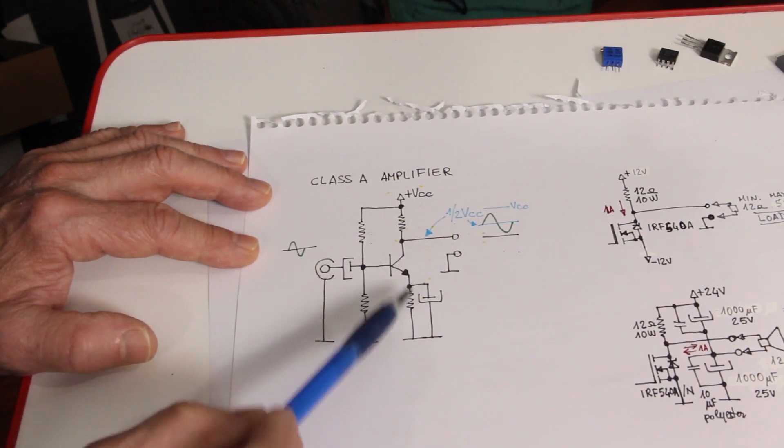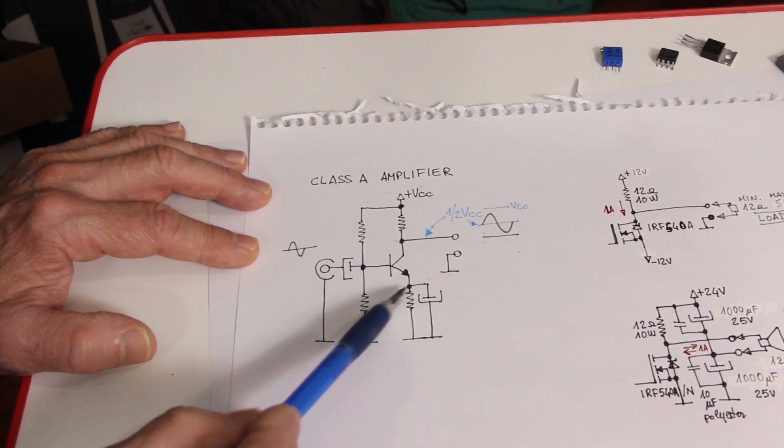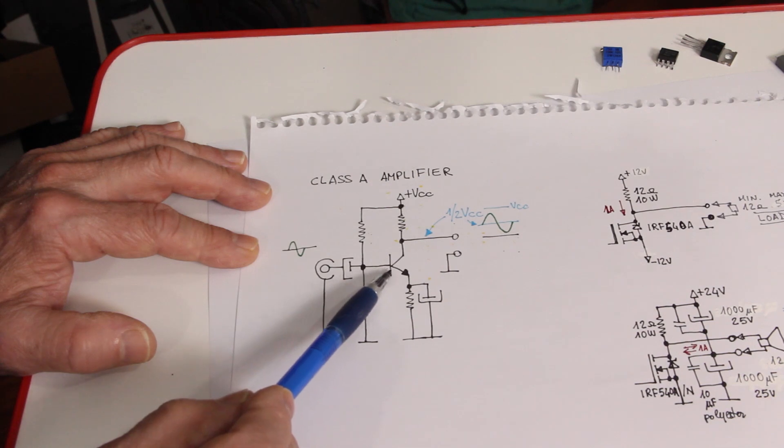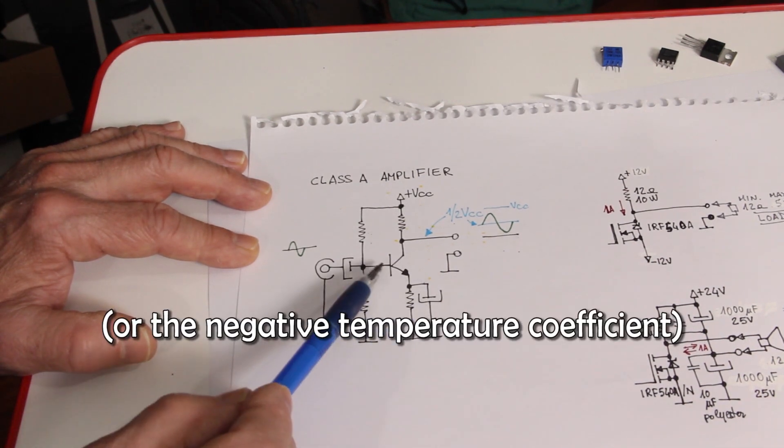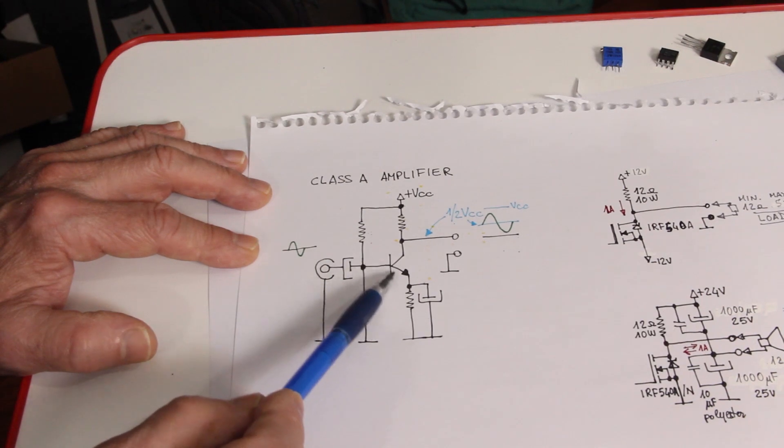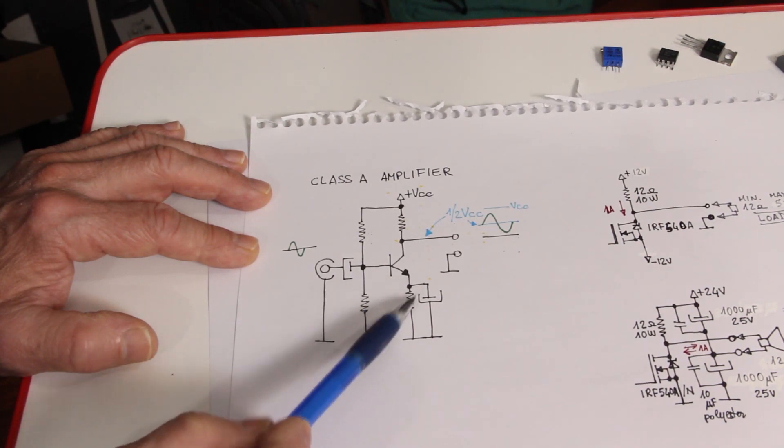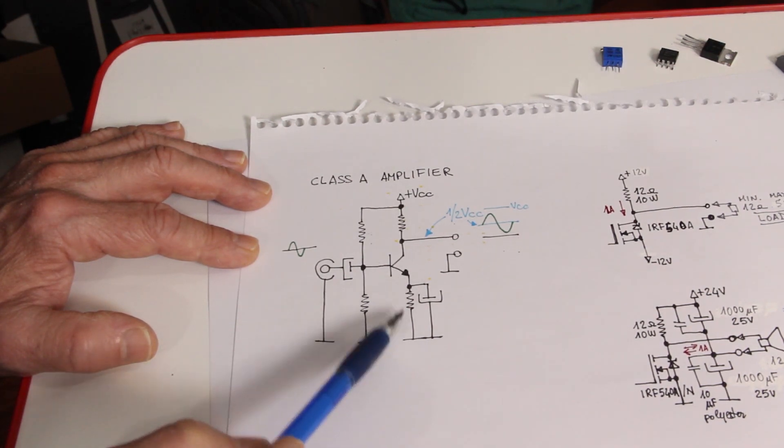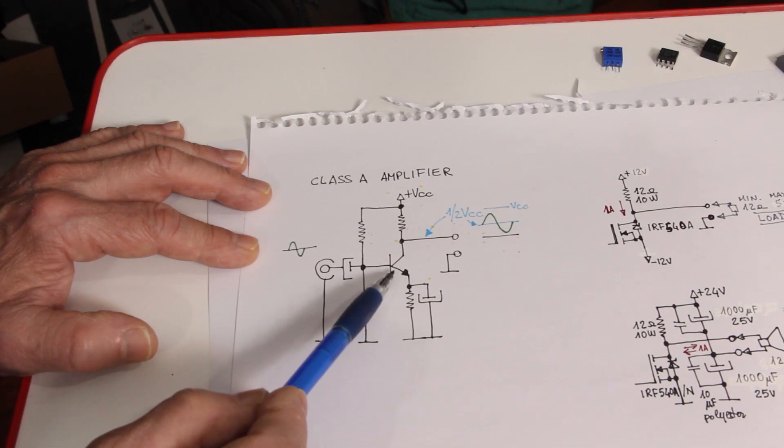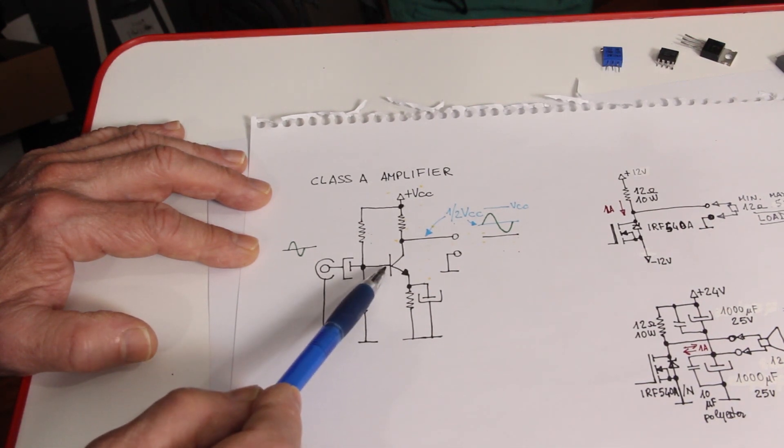And this resistor is important because it compensates the variation of gain of the transistor with temperature. In other words, if the transistor gains a little bit too much, the current that flows through this resistor would increase the voltage drop across the resistor itself and would cause a negative feedback reducing the current output from the base.